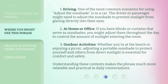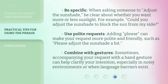Understanding these contexts makes the phrase much more relatable and practical in daily conversations. When asking someone to adjust the sunshade, be clear about whether you want more or less sunlight. For example: 'Could you adjust the sunshade to block the sun from my side?' Adding 'please' can make your request more polite and friendly, such as: 'Please adjust the sunshade a bit.' Sometimes, accompanying your request with a hand gesture can help clarify your intention, especially in noisy environments or when language barriers exist.